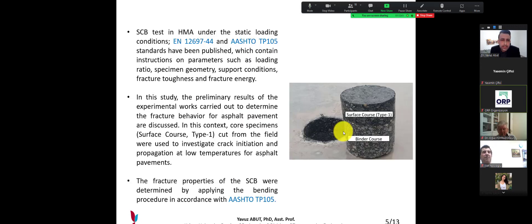SCB test in hot mix asphalt under static loading conditions EN 12697-244 and H2TP-105, these are the standards of the asphalt layer, have been published which contain instructions on parameters such as loading ratio, specimen geometry, support conditions, fracture toughness and fracture energy. In this study, the preliminary results of the experimental works to determine the fracture behavior for asphalt pavements are discussed.